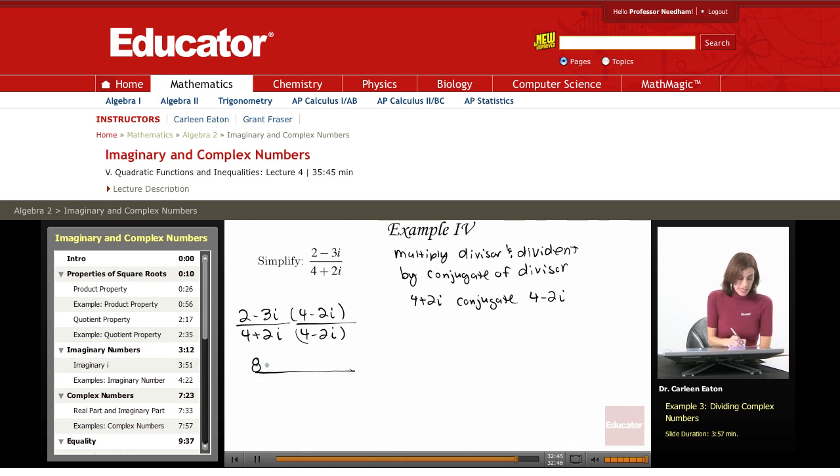Inner terms, negative 3i times 4 is negative 12i. Last terms, negative 3i times negative 2i is plus 6i squared.